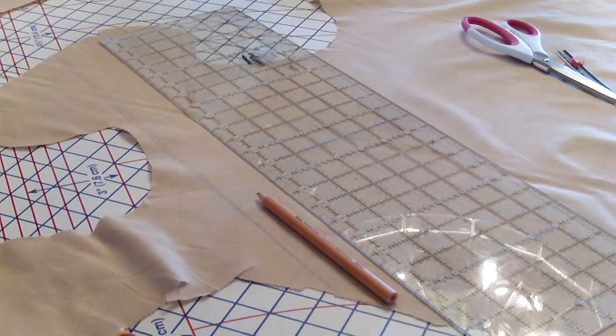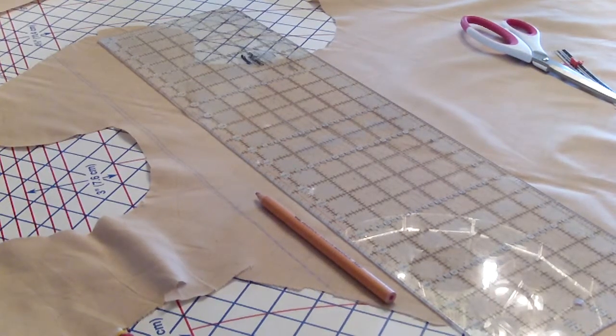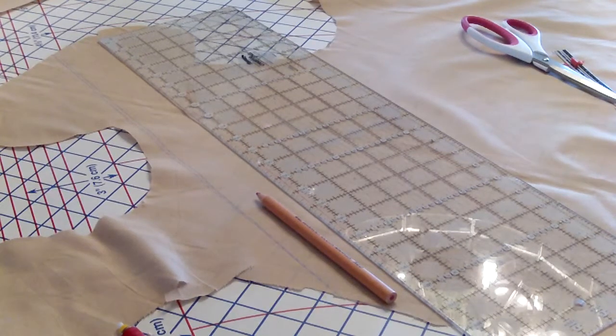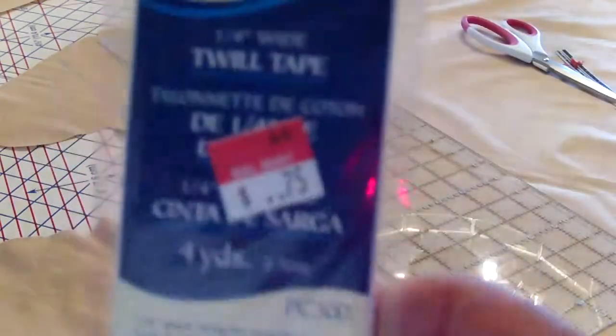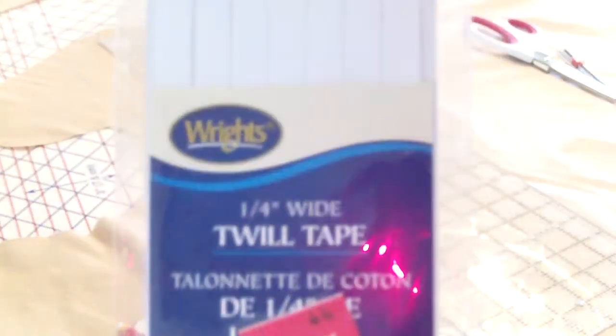Okay, I'm now making bias tape. I read the pattern, and the pattern states that I needed a quarter of an inch of bias tape. Apparently, I don't have it. I only have twill tape, which is good for the seams.